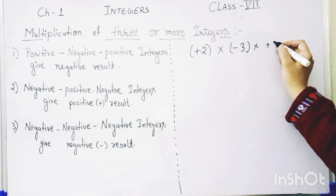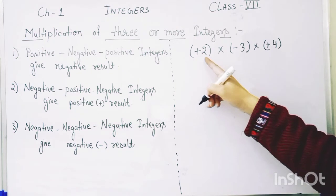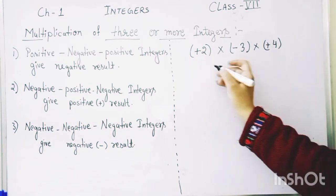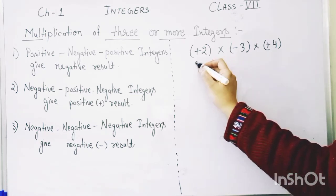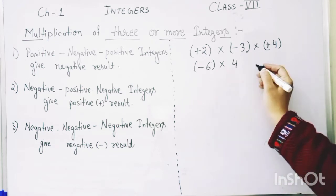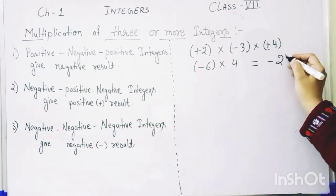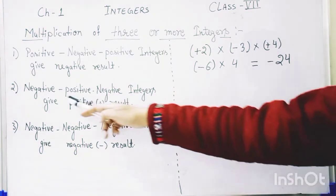Multiplying the first two numbers — minus two and plus two — gives us minus six. Then multiplying by four gives a result that is negative, which is minus 24.